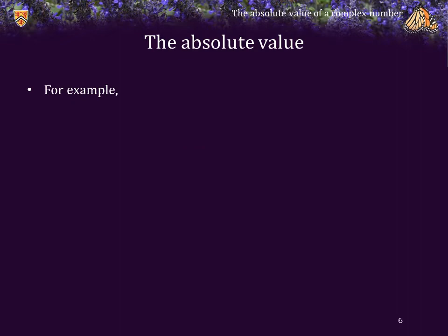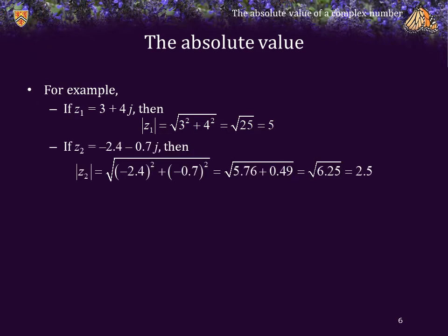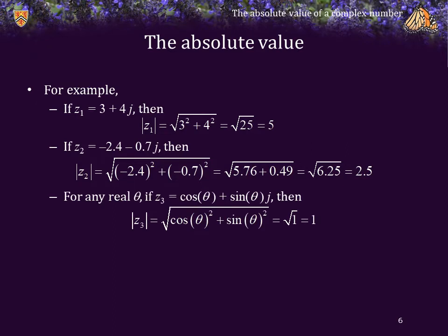For example, if z1 is 3 plus 4j, then the absolute value of z1 is 5. If z2 is negative 2.4 minus 0.7j, then after doing the arithmetic, we see that the absolute value of z2 is 2.5. If we consider any real value of theta and define z3 equal to cos(theta) plus sin(theta) times j, then the absolute value of z3 works out to be exactly equal to 1.